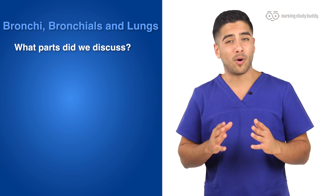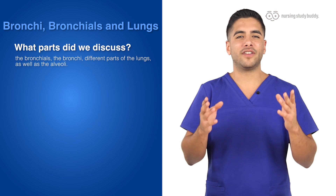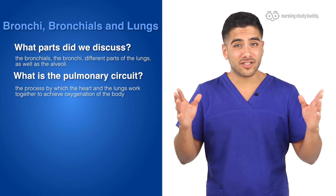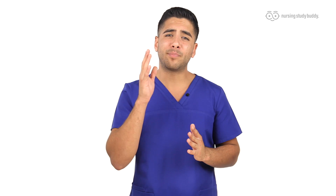Alright everyone, let's recap. In this video we introduced a couple of new parts of the pulmonary system: namely the bronchioles, the bronchi, the different parts of the lungs, and the alveoli. We also introduced a new process called the pulmonary circuit, where the heart and the lungs work together to achieve oxygenation of the body. That wraps up this video on the bronchi, the bronchioles, and the lungs, and wraps up our entire segment on the respiratory system. If you feel like you've missed something, feel free to go back and watch our other easy-to-follow videos on the respiratory system.